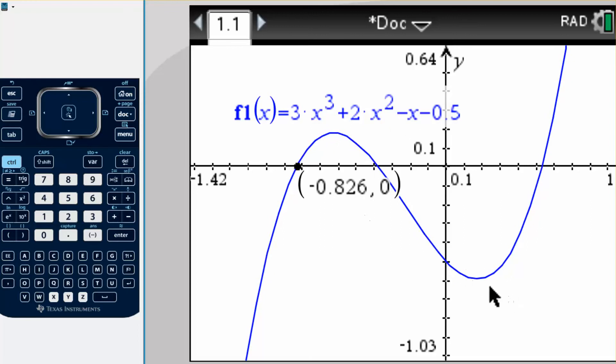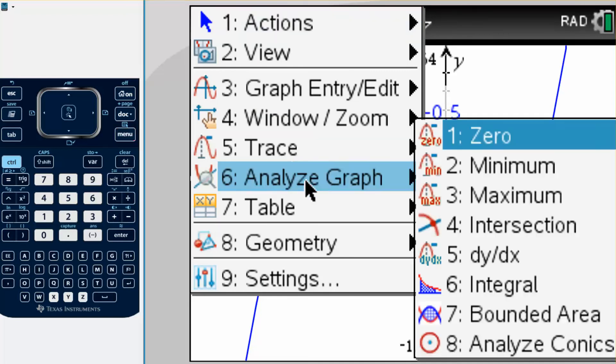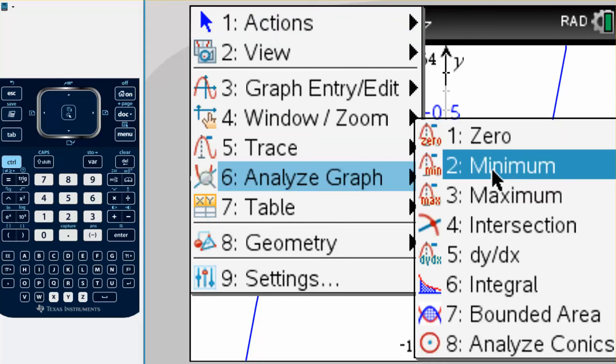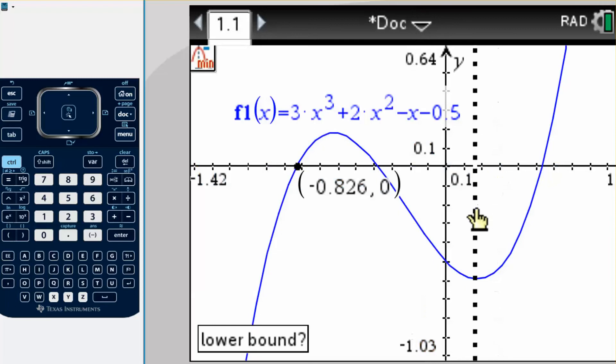If you want to say, let's find this lower bound down around here, what I would do is go menu, analyze graph, and then it's a minimum, that's a lower bound, so I'm going to go minimum.